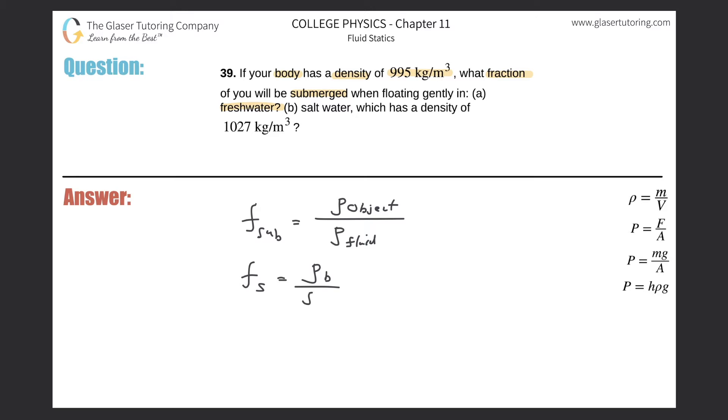The fraction submerged is simply equal to the density of your body divided by the density of the fresh water. It's really simple: 995 kilograms per cubic meter divided by the density of fresh water, which is simply 1000 kilograms per cubic meter. So the fraction submerged is 0.995. If you need that in terms of a percentage, simply multiply it by 100, and it's 99.5% of your body will be submerged.